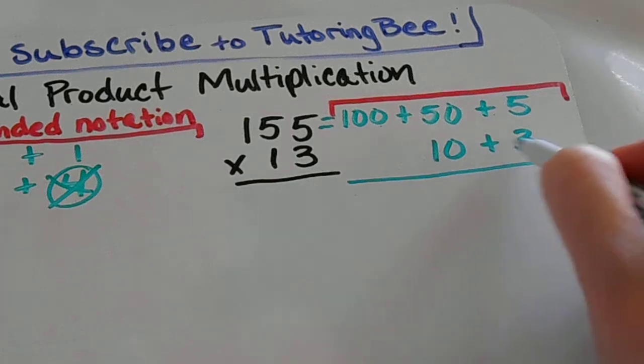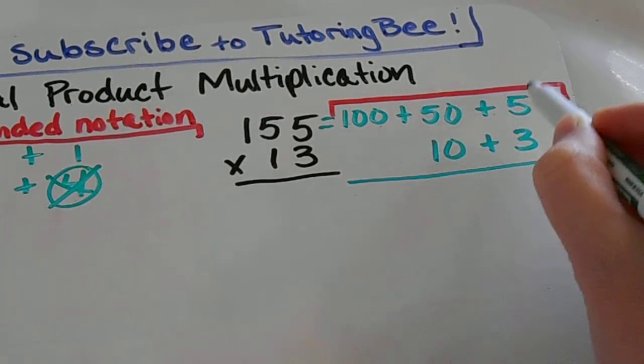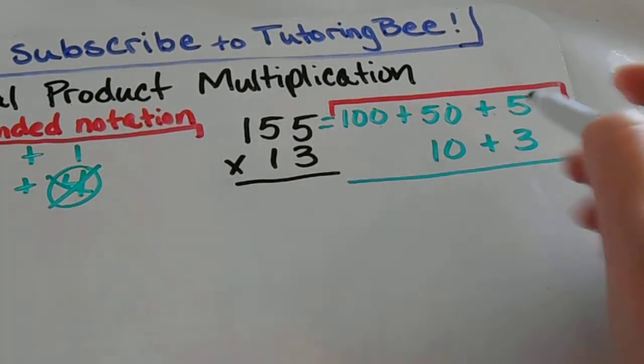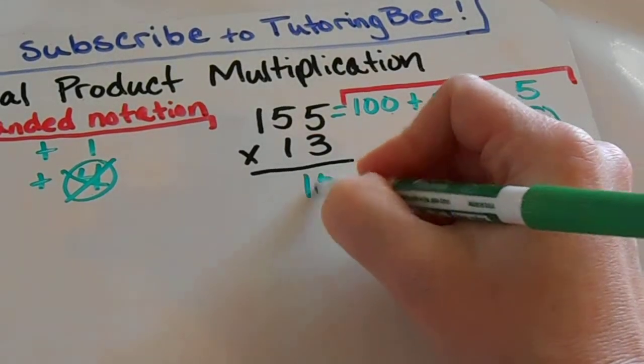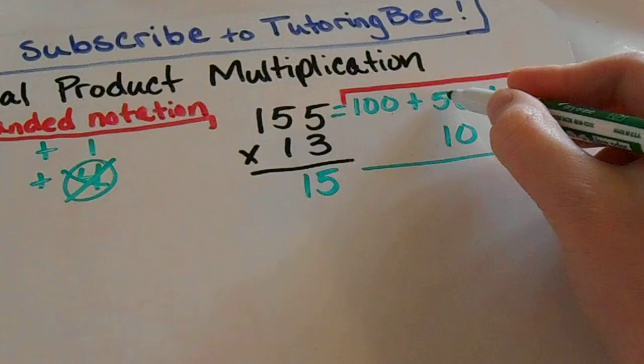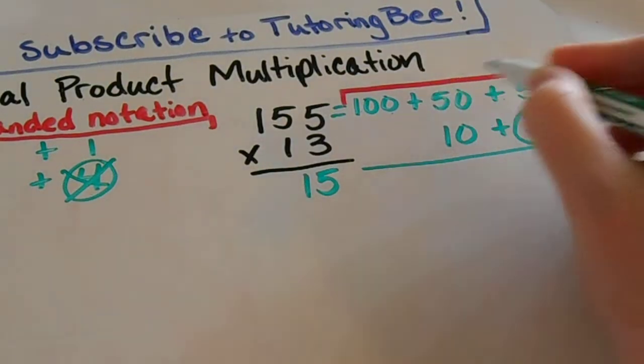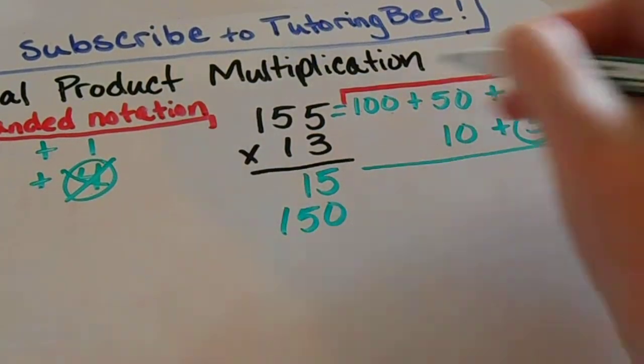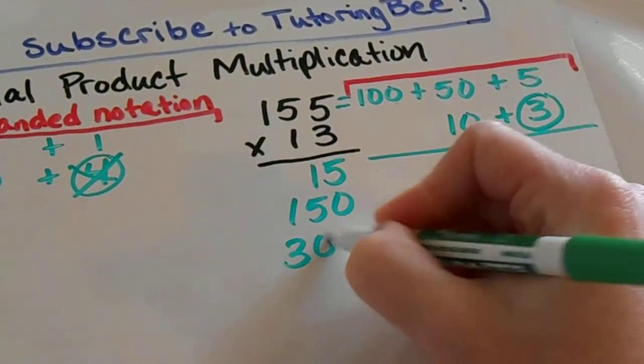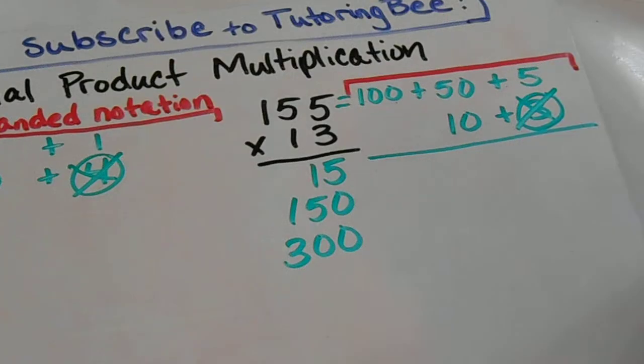Again I know that any number down here I have to multiply times all of the numbers up at the top. So I'm going to start with my 3. 3 times 5 is 15. 3 times 50 is the same as 3 times 5 with a 0 added on to the end of it. So I've got 150. And then 3 times 100 is 300. I'm done with that 3.